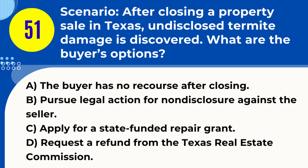Question 51. Scenario: After closing a property sale in Texas, undisclosed termite damage is discovered. What are the buyer's options? A. The buyer has no recourse after closing. B. Pursue legal action for nondisclosure against the seller. C. Apply for a state-funded repair grant. D. Request a refund from the Texas Real Estate Commission. Answer: B. Pursue legal action for nondisclosure against the seller. Explanation: If undisclosed termite damage is discovered after closing a property sale in Texas, the buyer may pursue legal action against the seller for nondisclosure or misrepresentation.